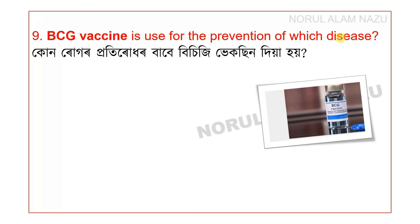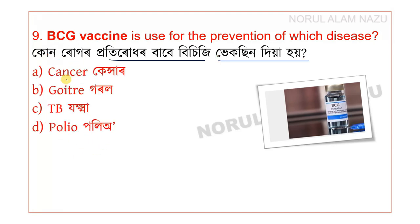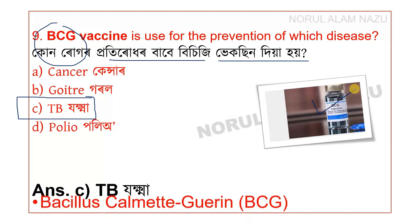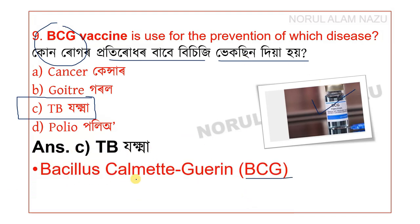Question number 9: BCG vaccine is used for the prevention of which disease? Options are Cancer, Goiter, TB, and Polio. The answer is TB. The BCG vaccine is given for the prevention of TB. BCG stands for Bacillus Calmette-Guérin.